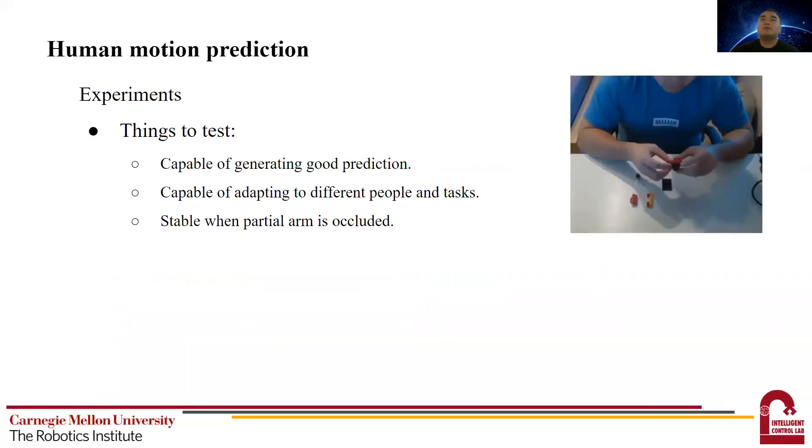Then we can move on to the experiments. We want to show that first, this method can generate accurate prediction. Second, it is able to adapt to unseen people and tasks. And third, it is stable when partial arm is occluded.